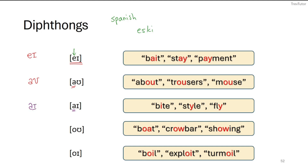For /aɪ/, we see that same central-low starting sound, then it moves to the /eɪ/ position as it closes: 'bite,' 'style,' 'fly.' For /oʊ/, words like 'boat,' 'crowbar,' 'show' — it starts at the /o/ position and moves up slightly: 'crow,' 'boat,' 'show.' Finally, /ɔɪ/ is probably the least frequent diphthong in English: 'oil,' 'exploit,' 'turmoil.' You can feel the movement — it starts at the back and moves to the front.